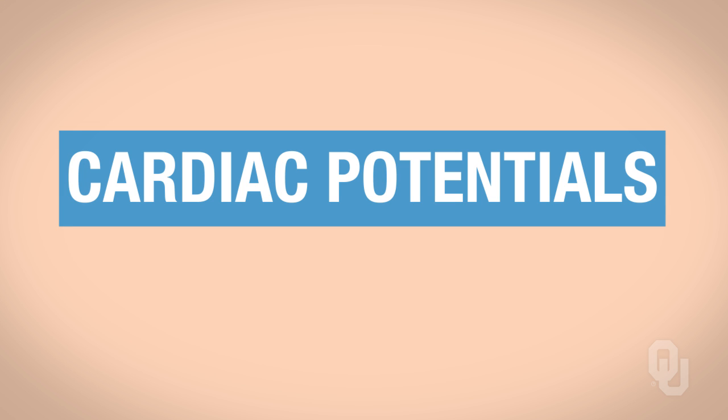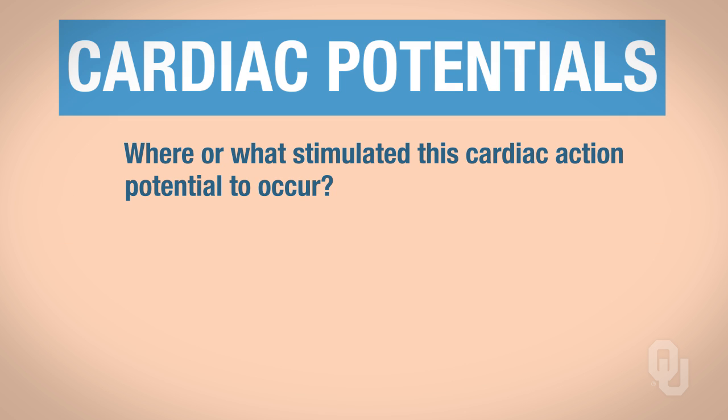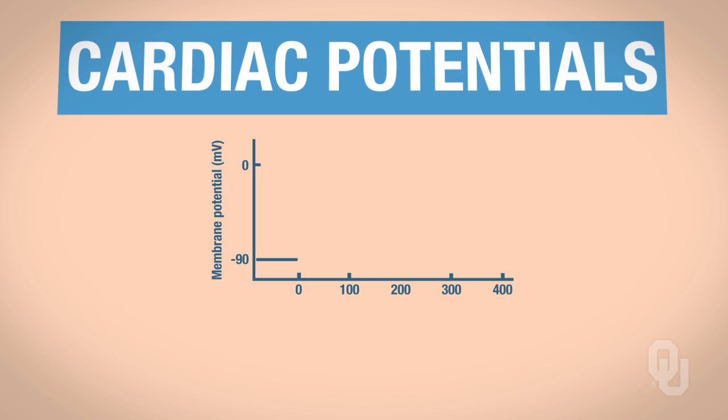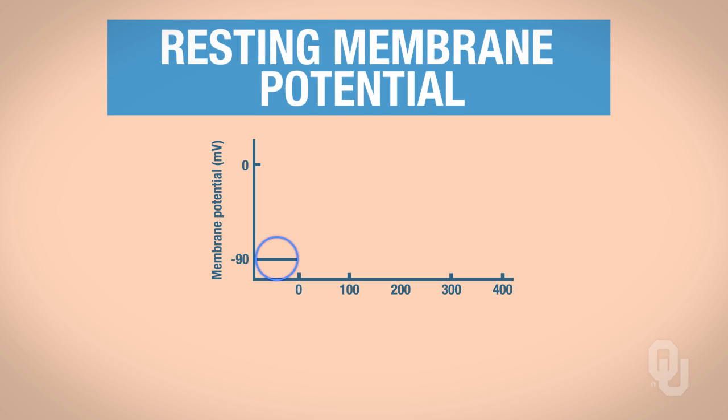We're going to discuss the cardiac action potential, occurring in the cardiac contractile cells. What I want you to think about is where or what stimulated this cardiac action potential to occur. We're going to begin at the resting membrane potential, which is near negative 90 millivolts.